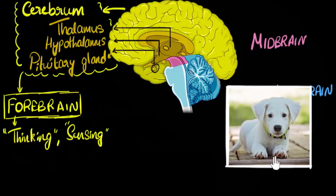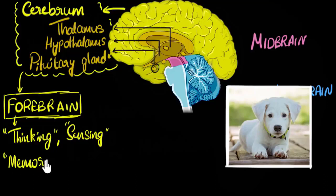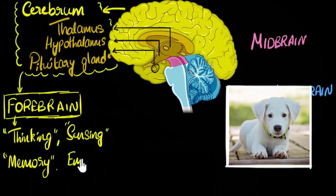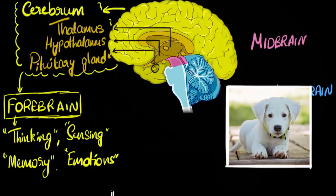You can identify a picture of a puppy and not confuse it with a donkey or tiger because of your memory — you know what puppies look like, and that comes from your forebrain. Memory and learning come from your forebrain. When you look at something cute, you feel happy — if you see something scary, you feel fear. All emotions come from your forebrain, including love. Love does not come from the heart; it comes from your forebrain.